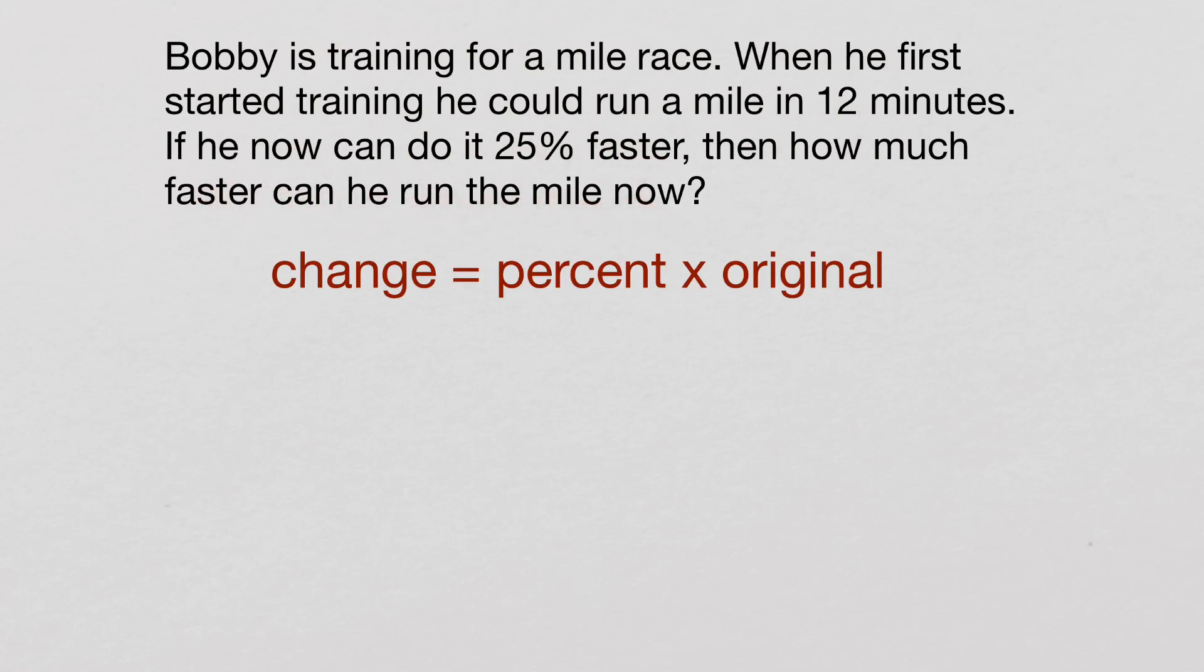I'm going to quickly fill some stuff in. He originally could run it in 12 minutes. We have a 25 percent change. I'm going to put that in as 0.25, because remember, we always want to put our percents as decimals. And I just put a variable in my change spot. So I'm finding the change.